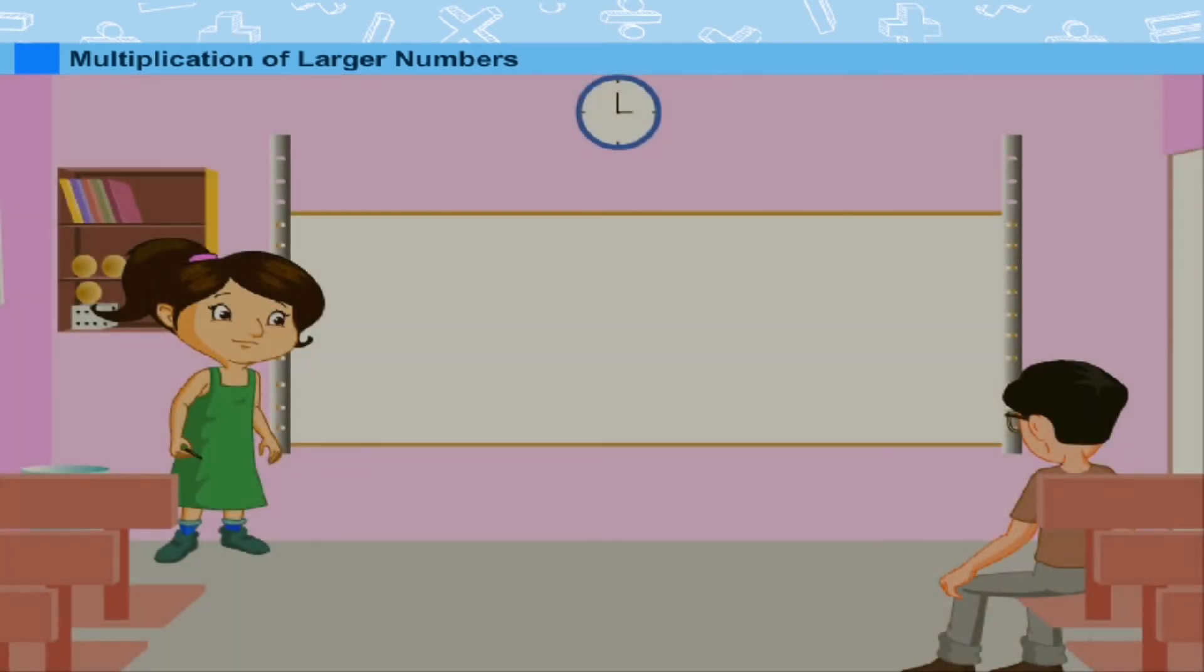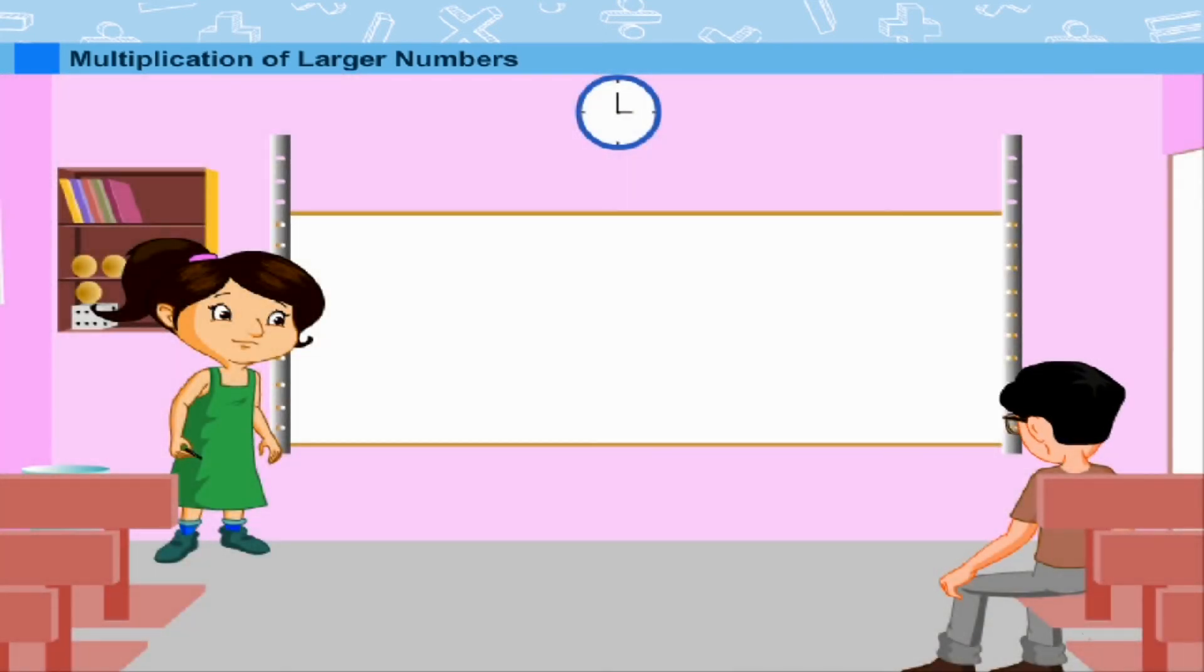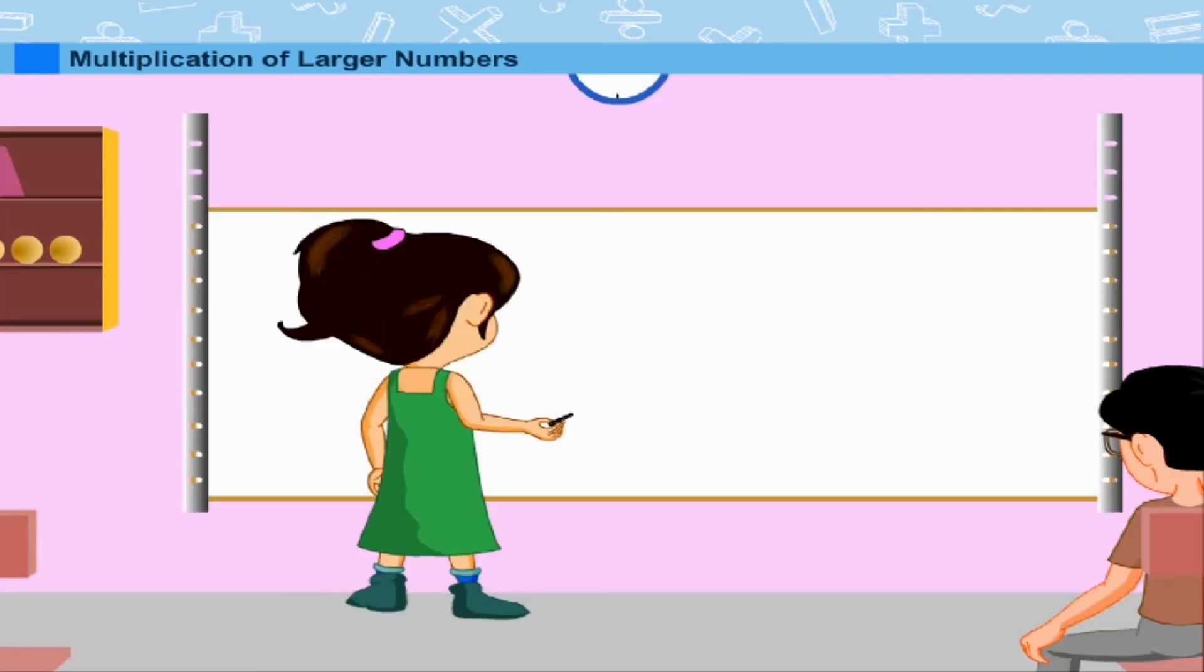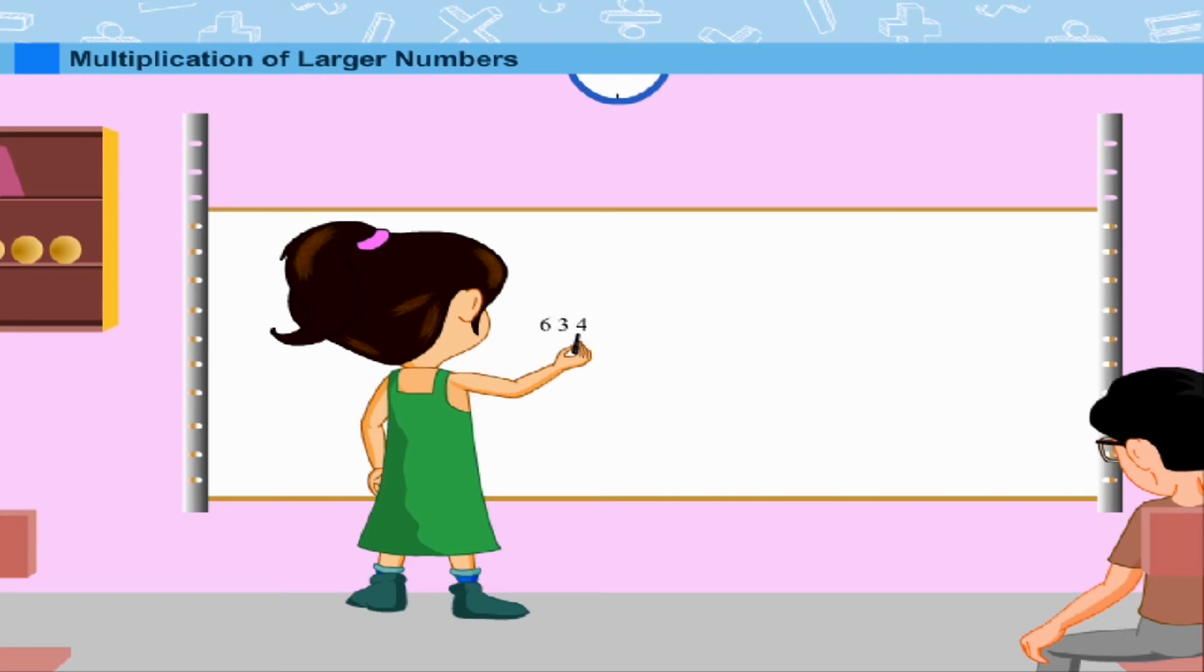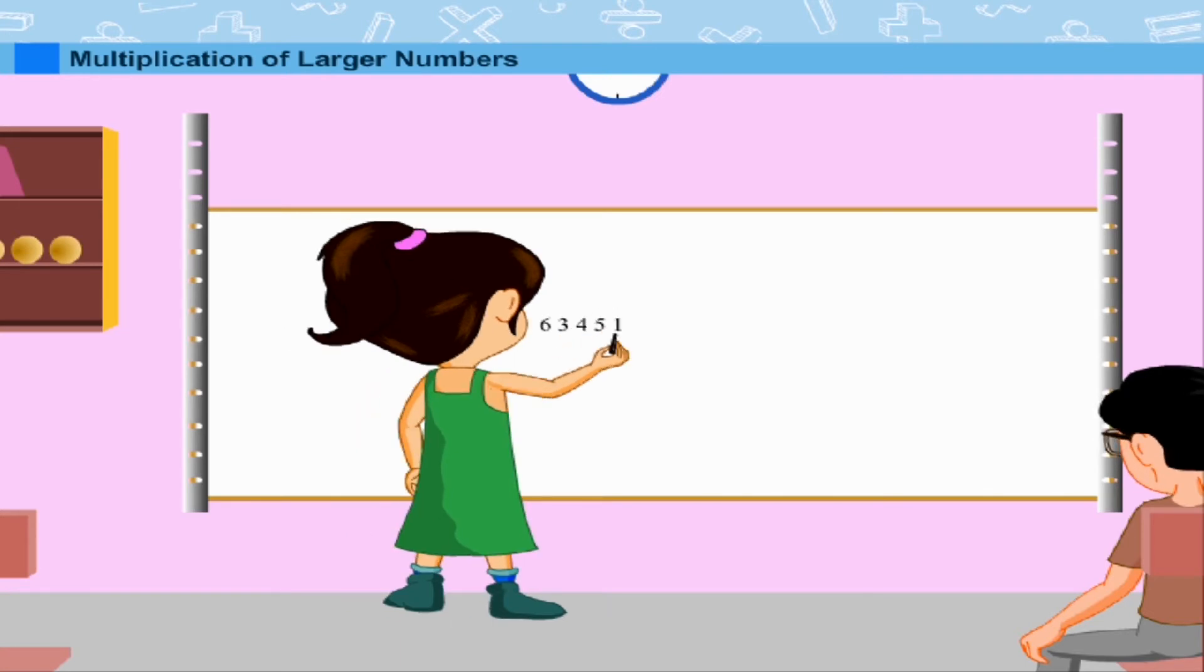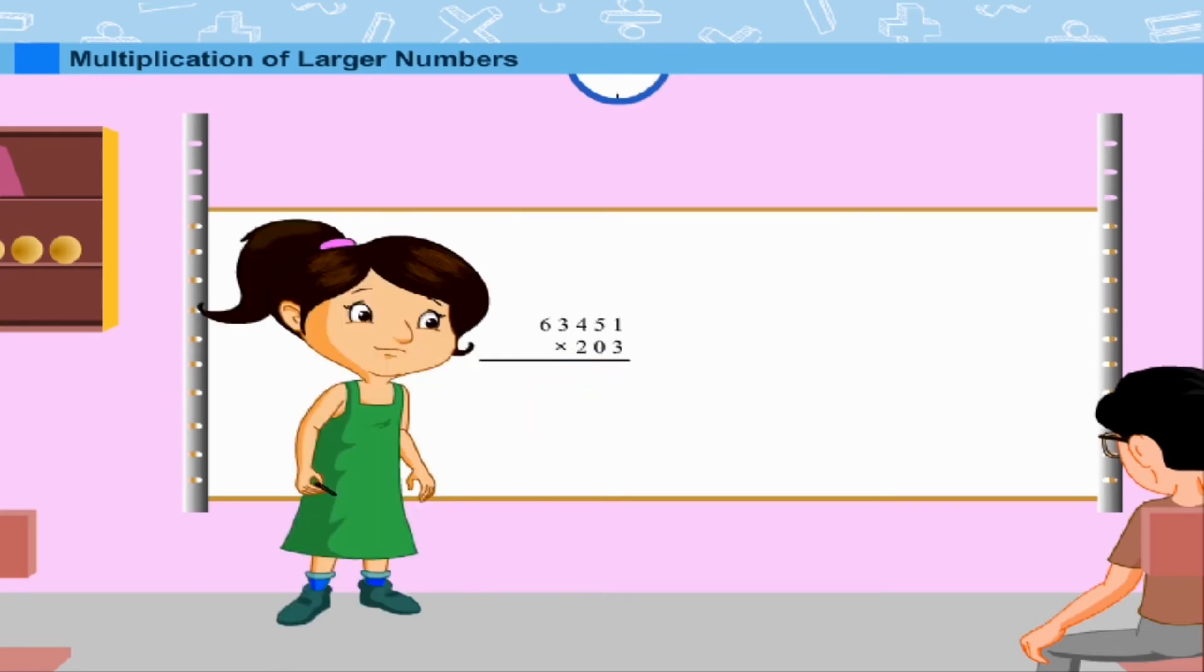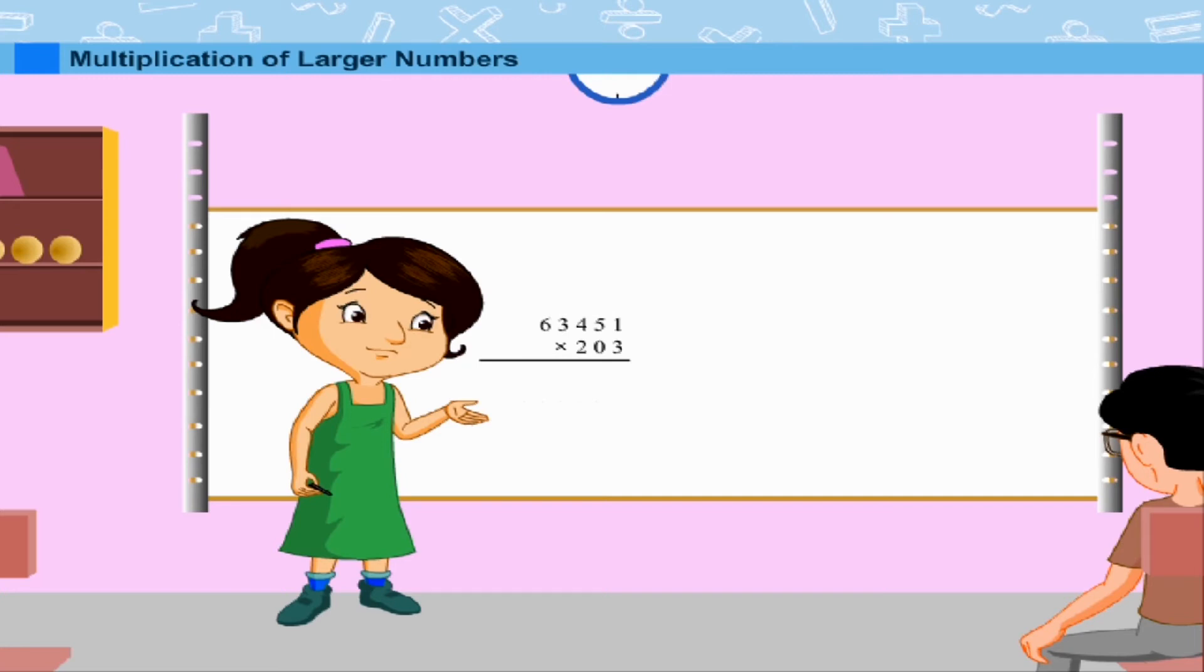Multiplication of larger numbers. Preeti is teaching her younger brother Rahul how to multiply larger numbers. The problem is 63,451 multiplied by 203. She writes that first we need to multiply 63,451 by 3,